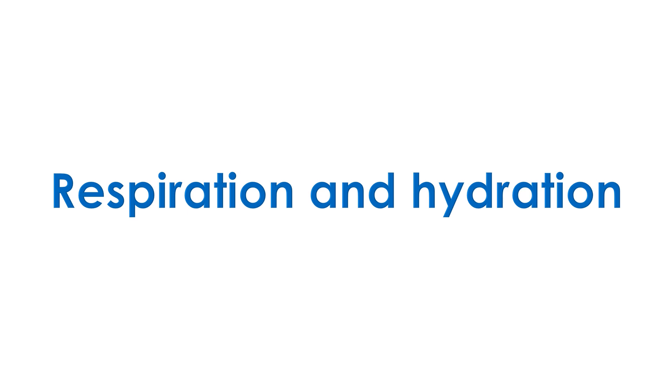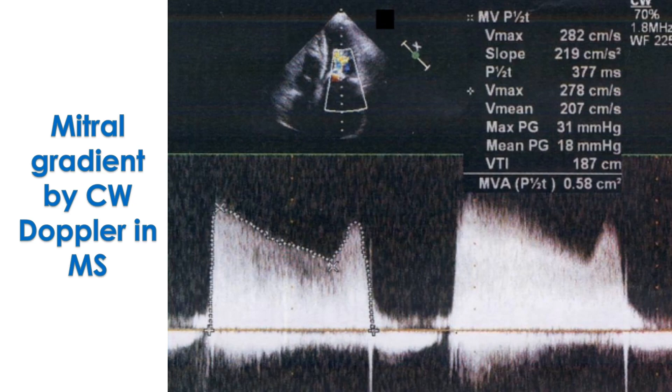While assessing right-sided chambers, the effect of respiration and hydration status should be noted. Sizes of right-sided chambers and Doppler velocities will be lower in a hypovolemic state. The normal inferior vena cava collapses in inspiration, while absence of inspiratory collapse is a feature of right heart congestion. The significant level of gradient across the tricuspid valve is just 2 mmHg for tricuspid stenosis, while it is 5 mmHg for mitral stenosis.